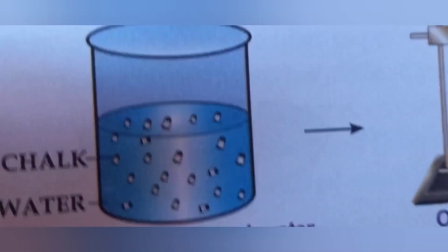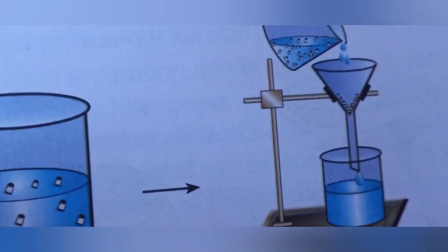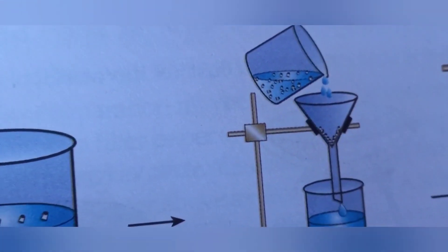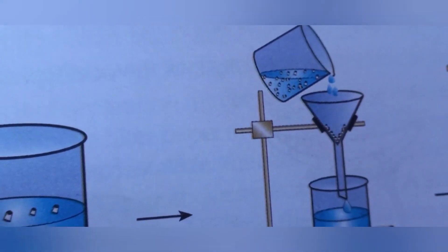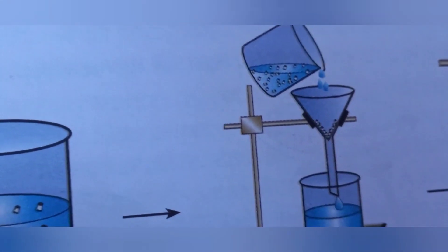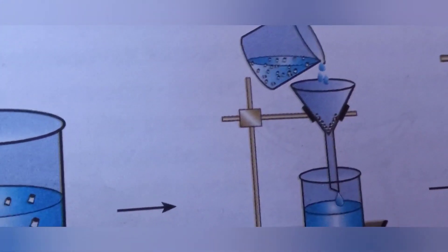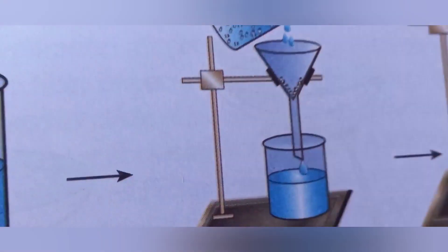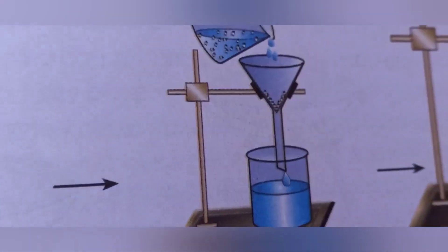For filtration, suppose we take a mixture of chalk and water and pass it through a filter paper placed in a funnel. The filter paper has very fine holes — the chalk particles, being larger than those holes, remain on the filter paper, while the clear water passes through and is collected below. This method is called filtration.